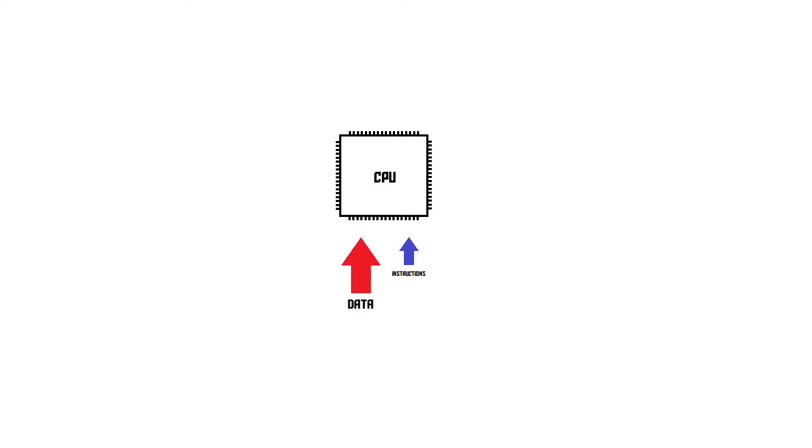A CPU is obviously a device that processes information, data. But data is not the only thing that goes into the CPU. For example, if I want my little Pentium 4 processor here to add up some numbers for me, I'm not just going to give it the data. I also need to give it an instruction that tells it to add up those numbers. So instructions are very important, because then the CPU knows what to do. These instructions are simply a bunch of zeros and ones — some machine code that the CPU can understand.